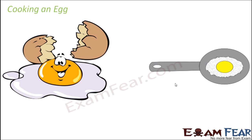When the omelette is formed, not only the appearance changes but also the chemical composition. The liquid egg white, which was initially liquid, becomes solid when cooked. During cooking, the protein molecules present inside the egg undergo changes in their structure, altering the chemical composition. The type of protein in a cooked egg is quite different from that in a raw egg. Because the chemical composition gets altered due to heating, cooking an egg is a chemical change.